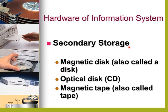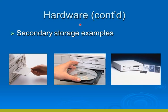Secondary storage includes magnetic disk, also called a disk, optical disk such as CD, and magnetic tape, also called tape. These are some examples of secondary storage.